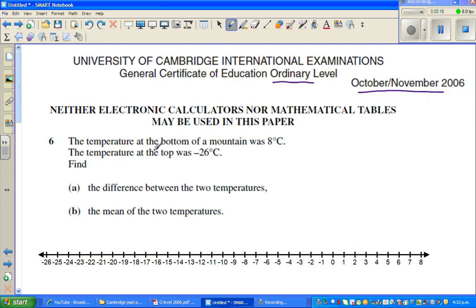The question is: the temperature at the bottom of the mountain was 8 degrees centigrade, the temperature at the top was minus 26 degrees centigrade. Find the difference between the two temperatures. So I have drawn a number line. This is your minus 26 degrees, and this is your 8 degrees centigrade.